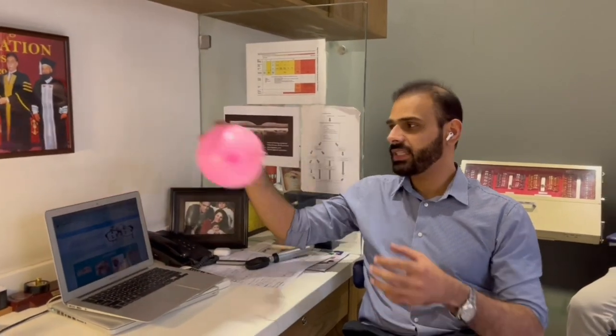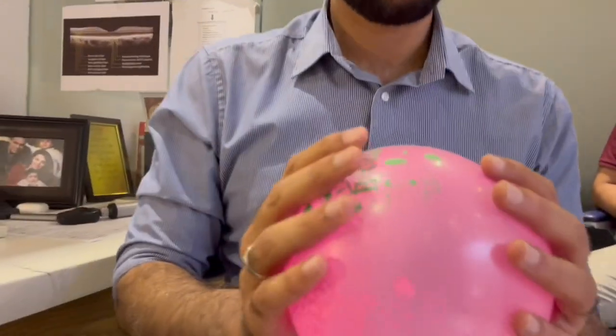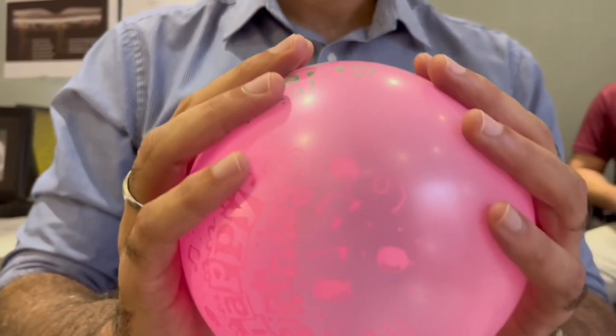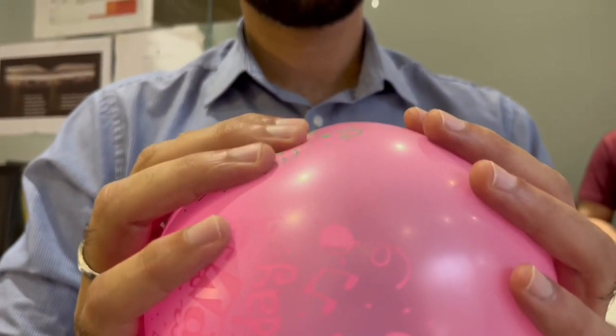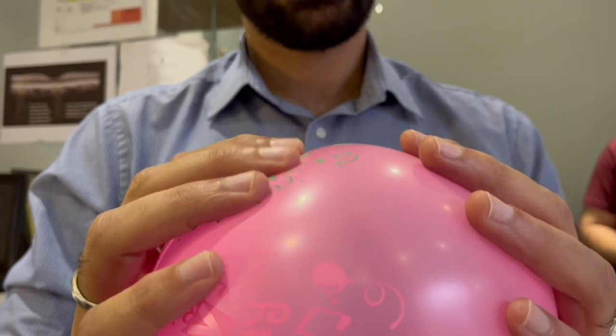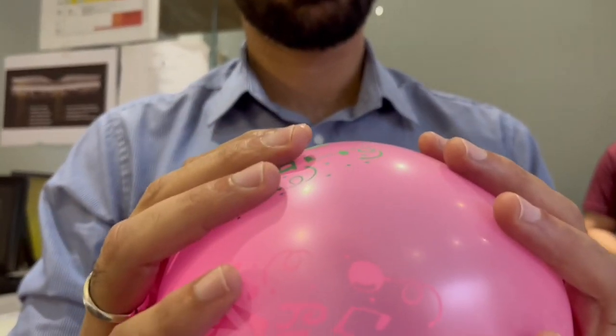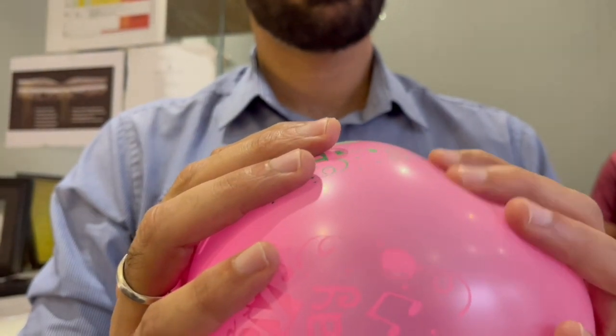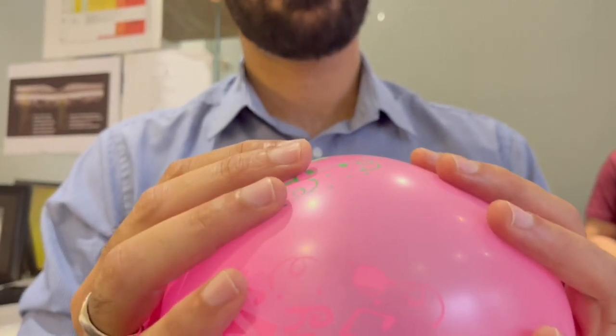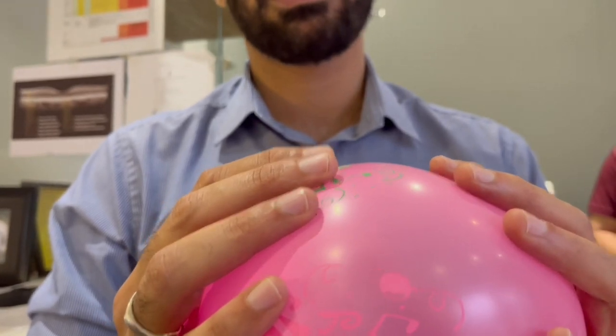So basically what we are doing is we are taking a closed space, think of this as the eye, and we are pressing the fingers of the right hand and feeling the pressure on my left hand. Similarly, I will press the fingers of my left hand and then feel the transmitted pressure on my right fingers.